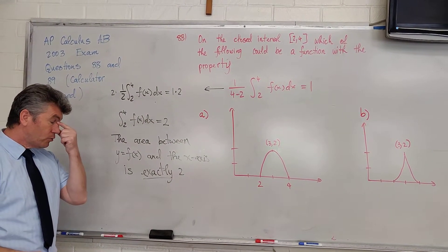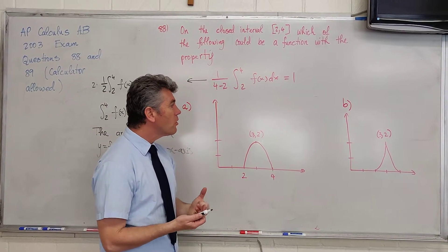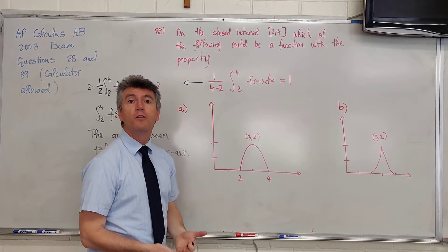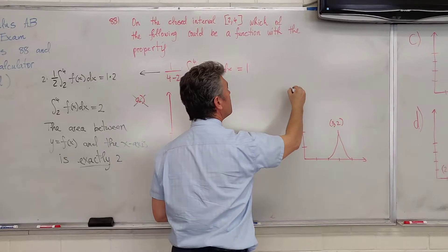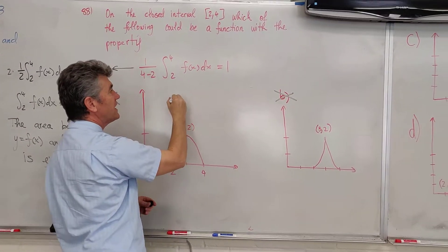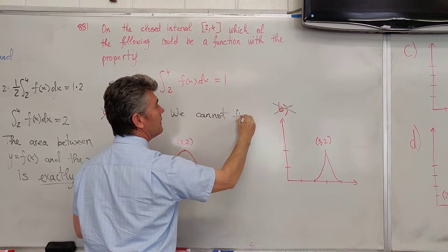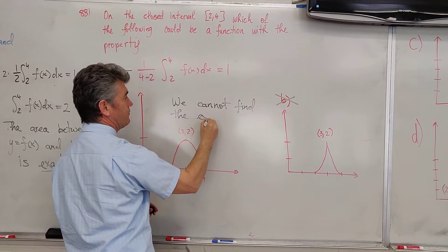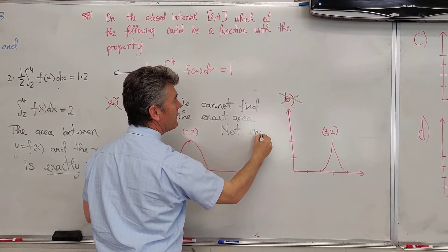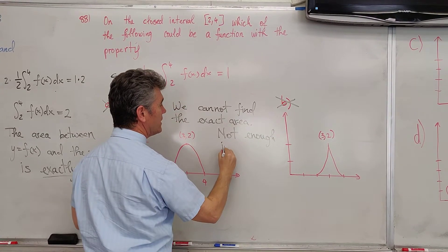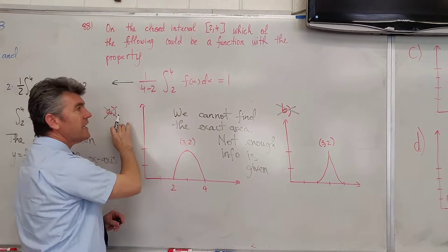Because it allows us to eliminate two choices, choice A and choice B. There's no way - I don't know what functions they are - there's no way I can find the exact area where not enough information is given.